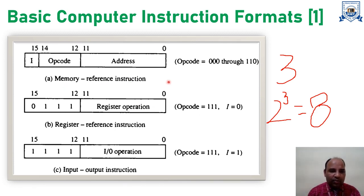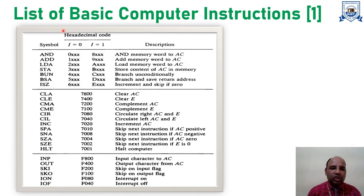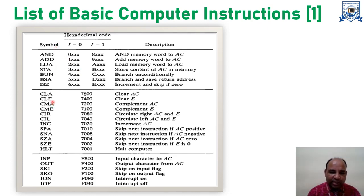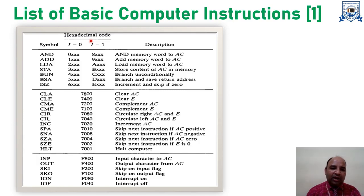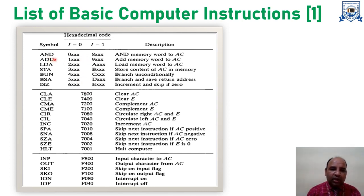This slide shows the basic computer instruction. One column lists the symbols used to represent each particular computer instruction, and the next column shows the equivalent hexadecimal value. As we saw in the previous slide, every computer instruction format has 16-bit values, and when converted to hexadecimal, 16 bits become 4 hexadecimal digits. So this table represents the hexadecimal values for each and every computer instruction.